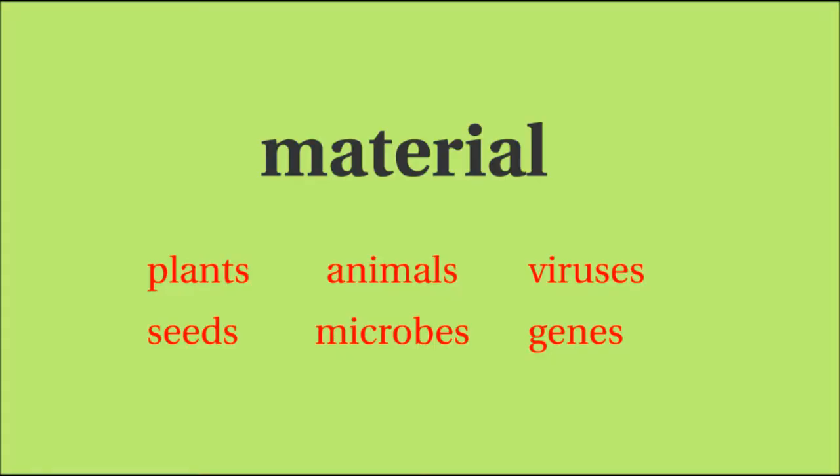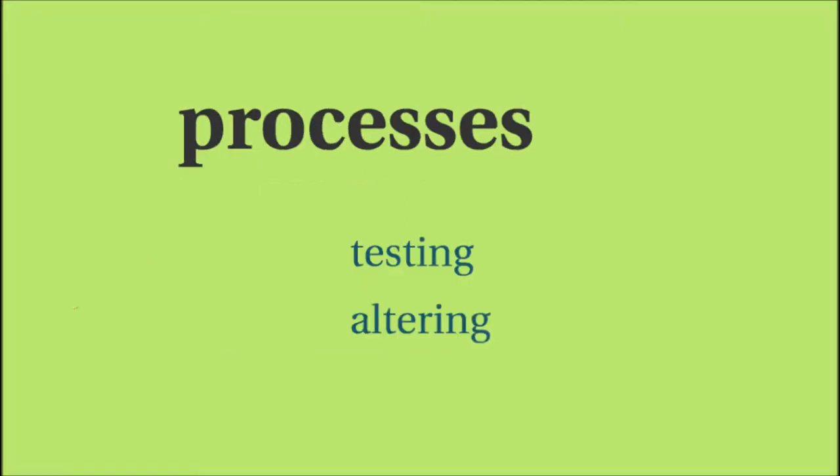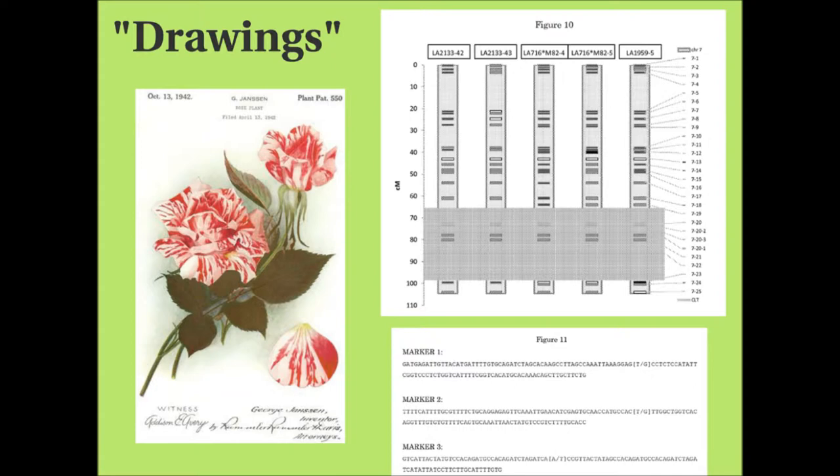While products of nature were not regarded as patentable — and I'm using 'patent' but also 'protection' in the sense of certificate of a variety — until the early 20th century, the law has changed to recognize different aspects of living things that can be rendered intellectual property: from plants, seeds, animals, microbes, viruses, genes, to also processes like testing and altering genetics. As IP protection of plants has changed through the 20th century, the images that accompany patent applications have changed too — from color photographs of new varieties to images of electrophoresis gels and gene markers that claim to explain the phenotypic differences being patented. Images have taken on a more explicative role in patent applications.